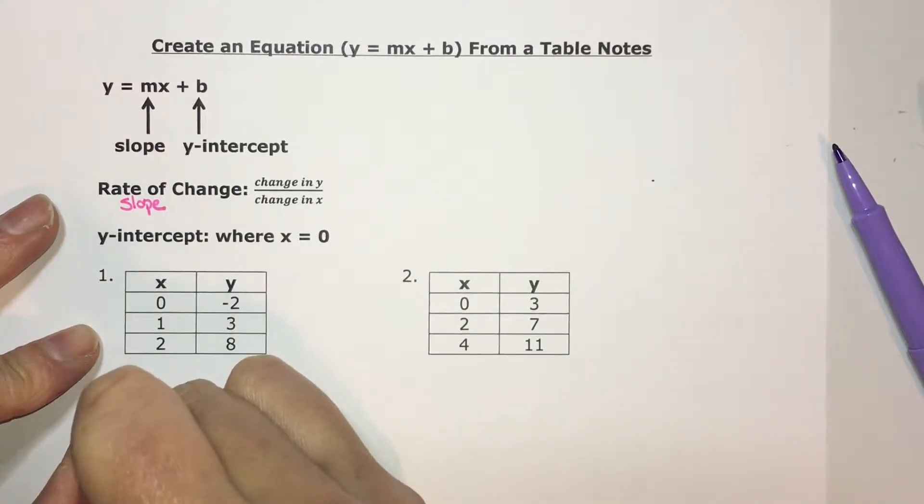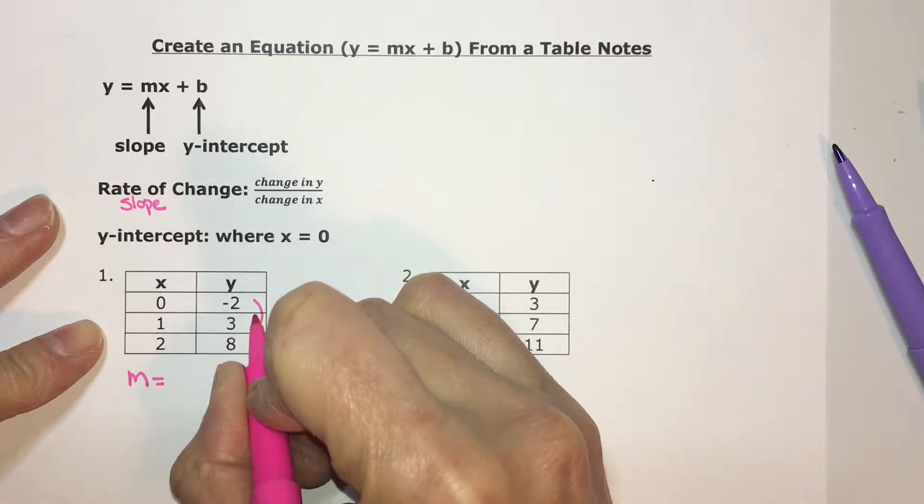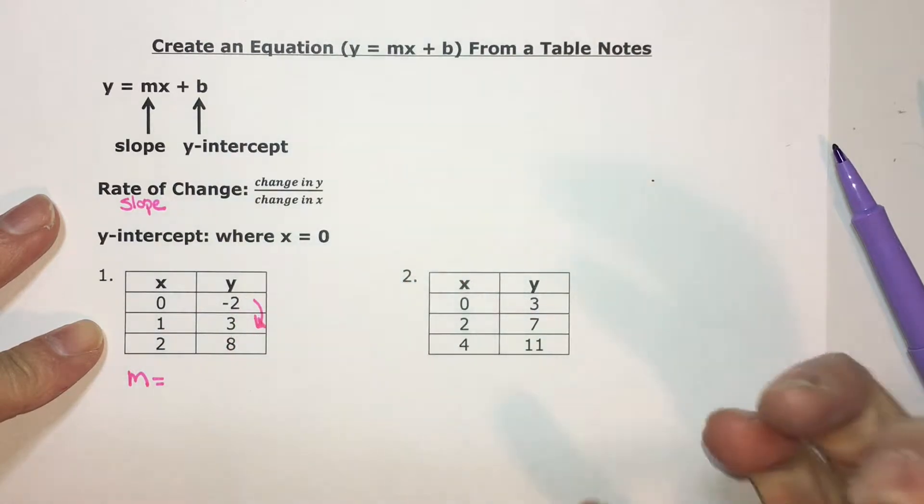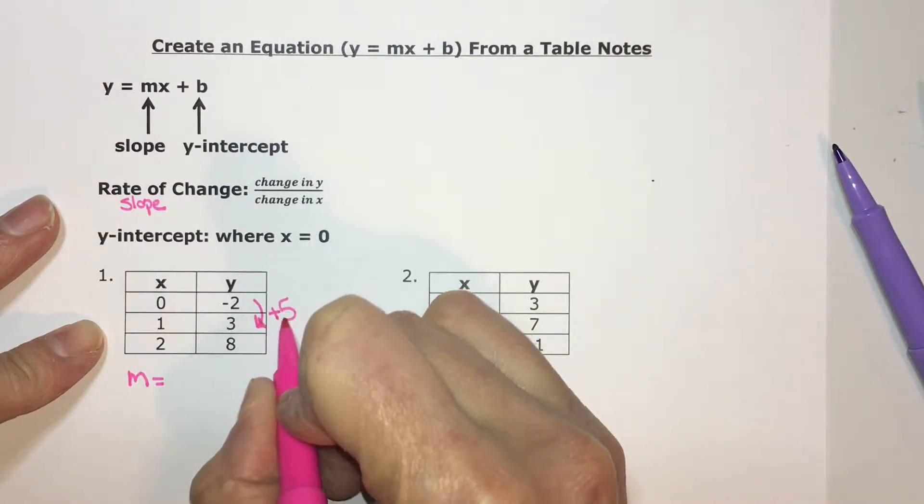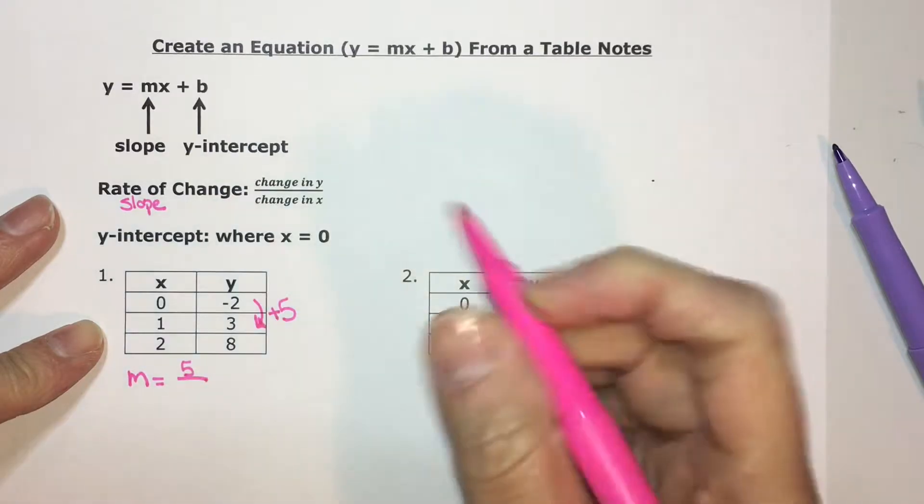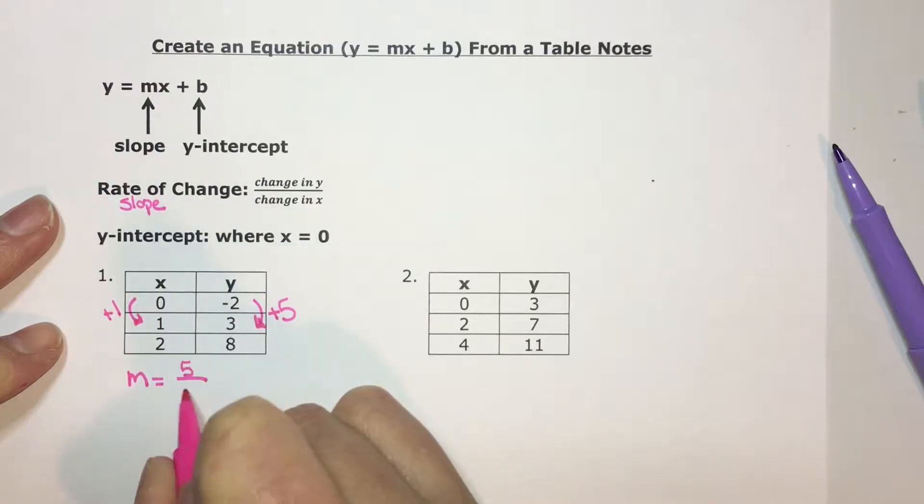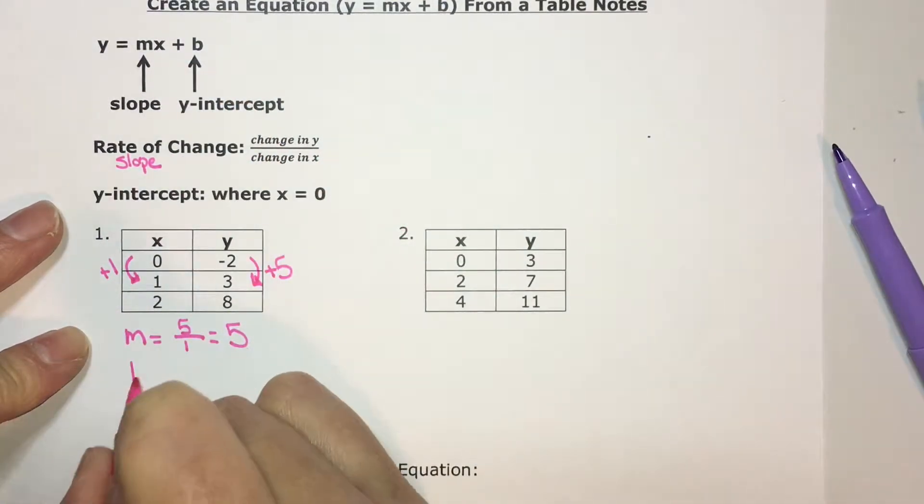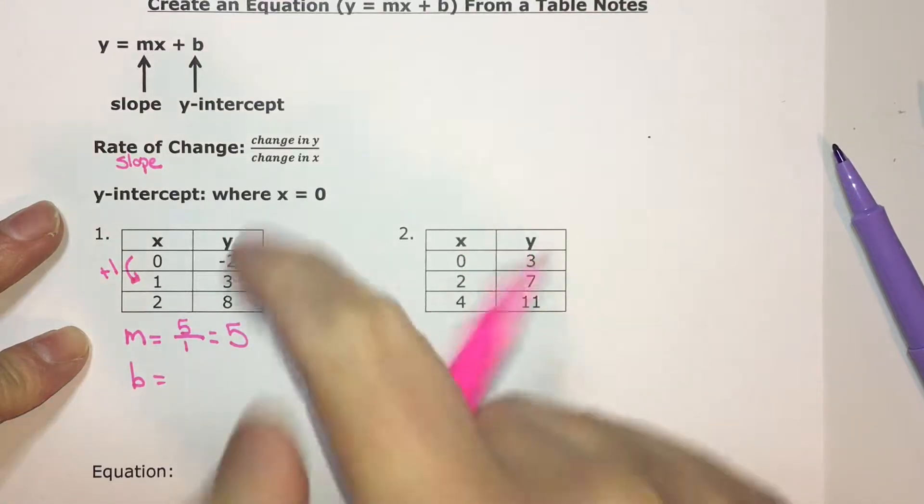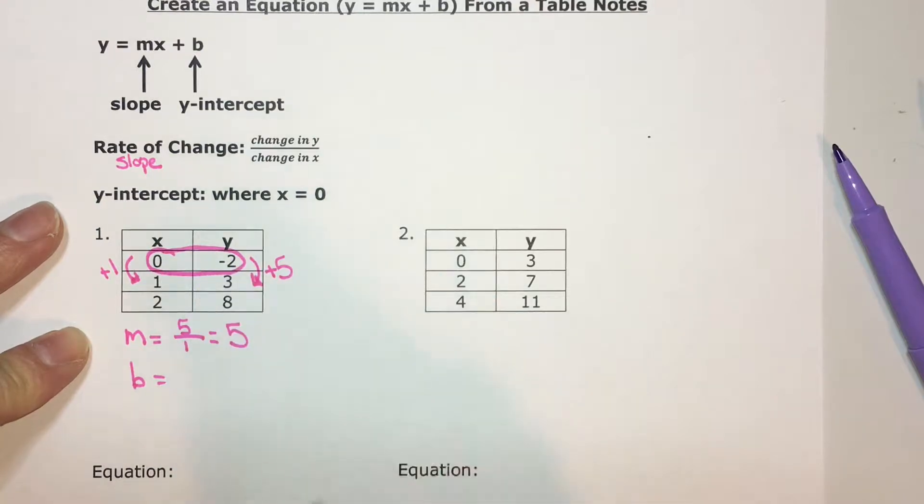Here, the slope, the rate of change, we do change in the y-values, meaning if you start at one and go to the next, what's happening? Well, to go from negative 2 to positive 3, you're adding 5. So it's positive 5 over the change in x. To go from 0 to 1, you're adding 1. 5 over 1, 5 divided by 1 is 5. Then b, your y-intercept. I did say it's where the y-value for x is 0. If you can find where x is 0, in this case, the y-value is negative 2.